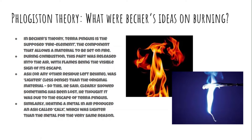During combustion, terra pinguis was released into the air, with flames being the visible sign of its escape. When things burn they often leave an ash — a very low density residue. Becher thought this lighter ash clearly showed that something had been lost from the material, due to the escape of terra pinguis. Similarly, heating a metal in air produces an ash called calx, which was also lighter than the original metal. A fine example is magnesium burning in air, which leaves behind a very low density, light white ash.